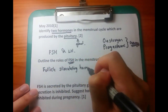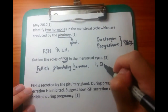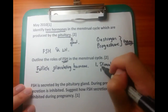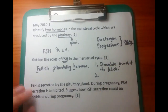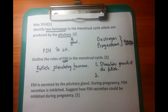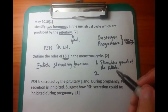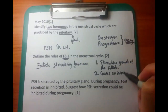So that's what we've written down here. The second question is: outline the role of FSH. Given that it's called follicle stimulating hormone, it's going to stimulate the growth of the follicle. The second thing, which is a bit less obvious, is that the release of FSH causes an increase in estrogen secretion. So FSH causes an increase in estrogen.